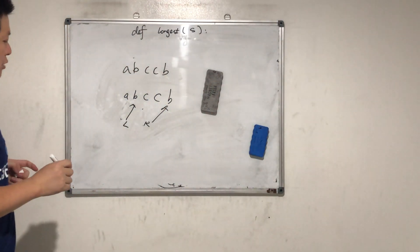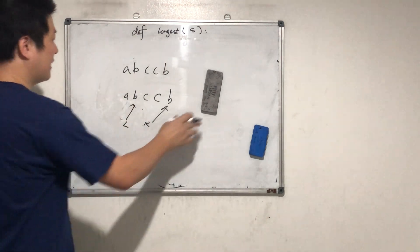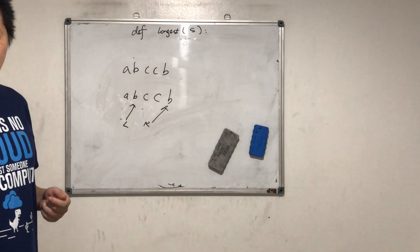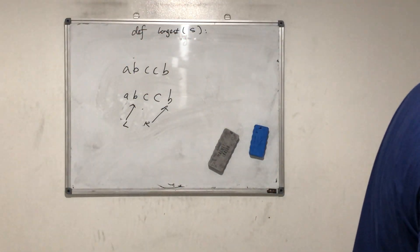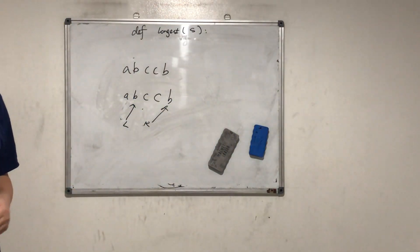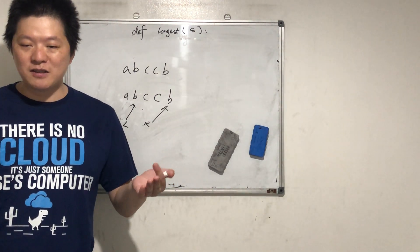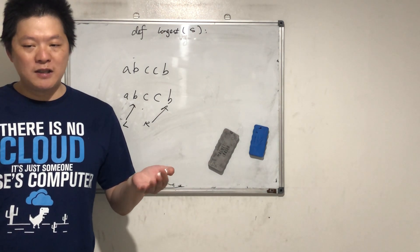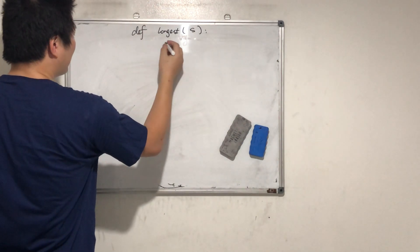What kind of data structure can we use to keep tracking the distinct characters in the window? If we want to keep counting, we can use — Counter. Counter. We can use the dictionary. Let's do it quickly.